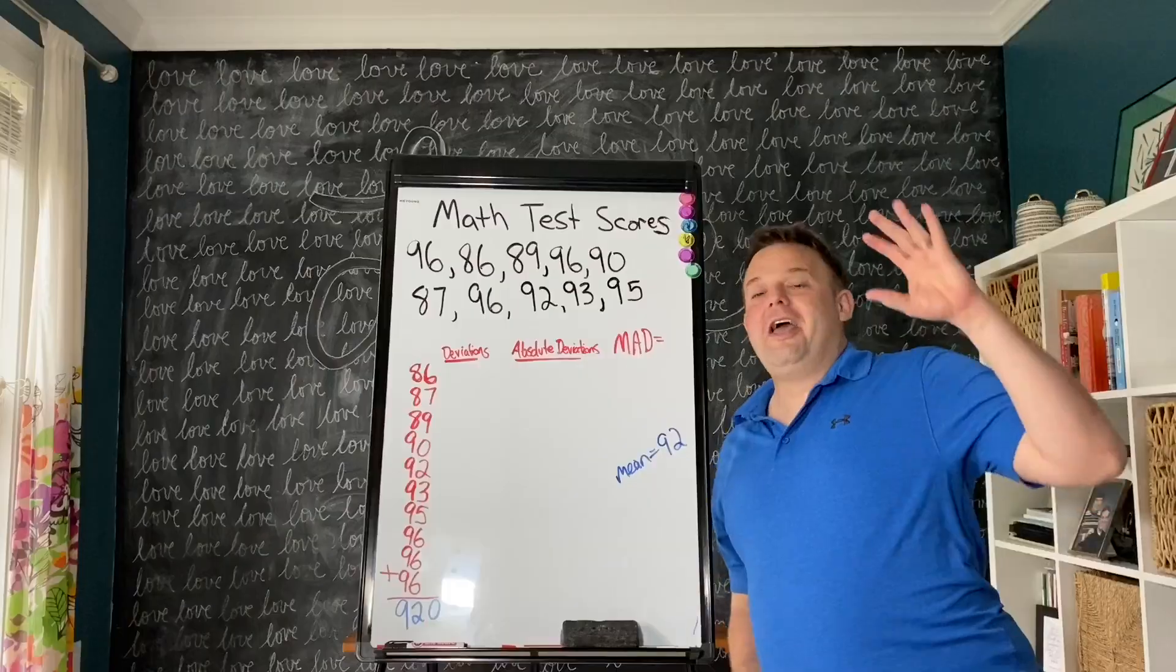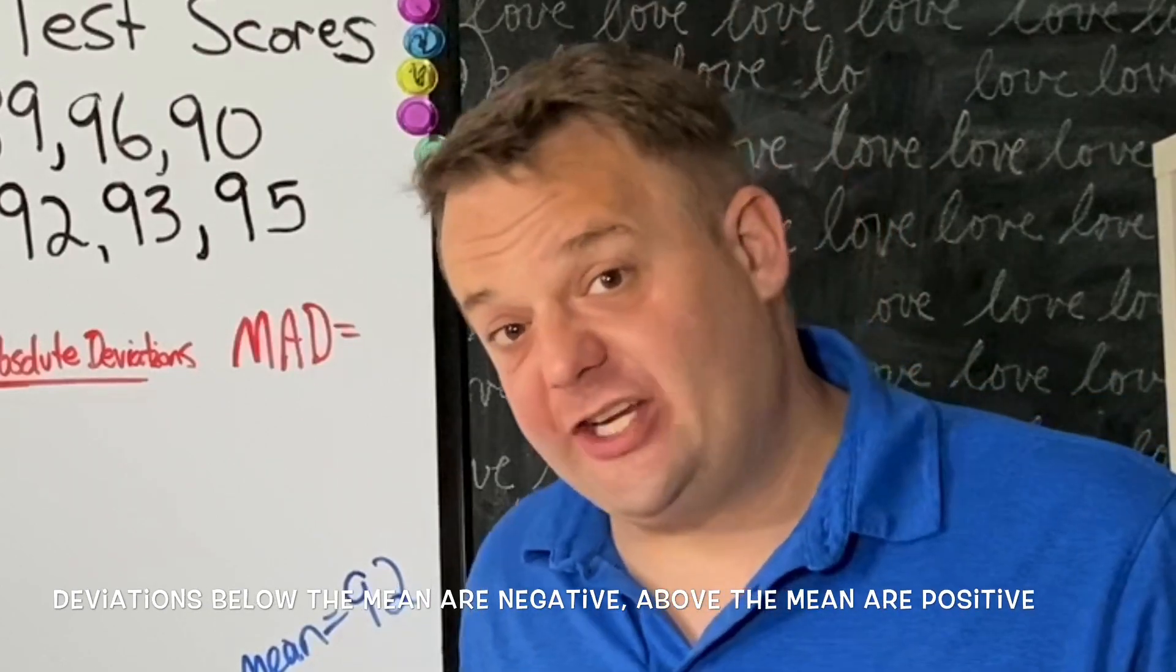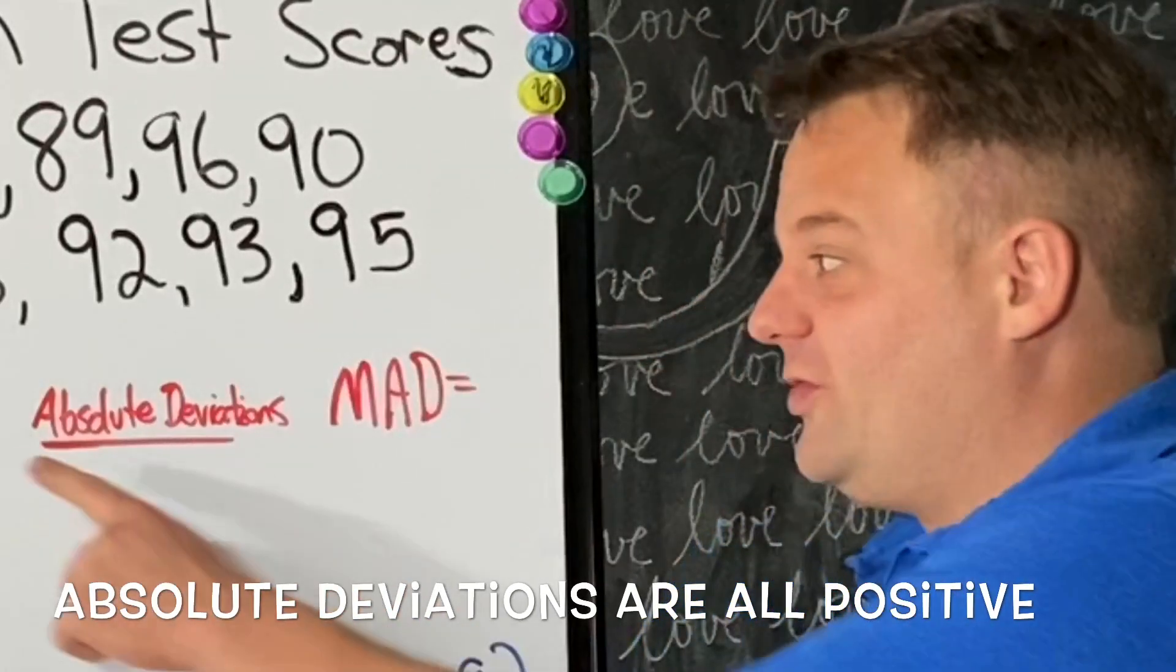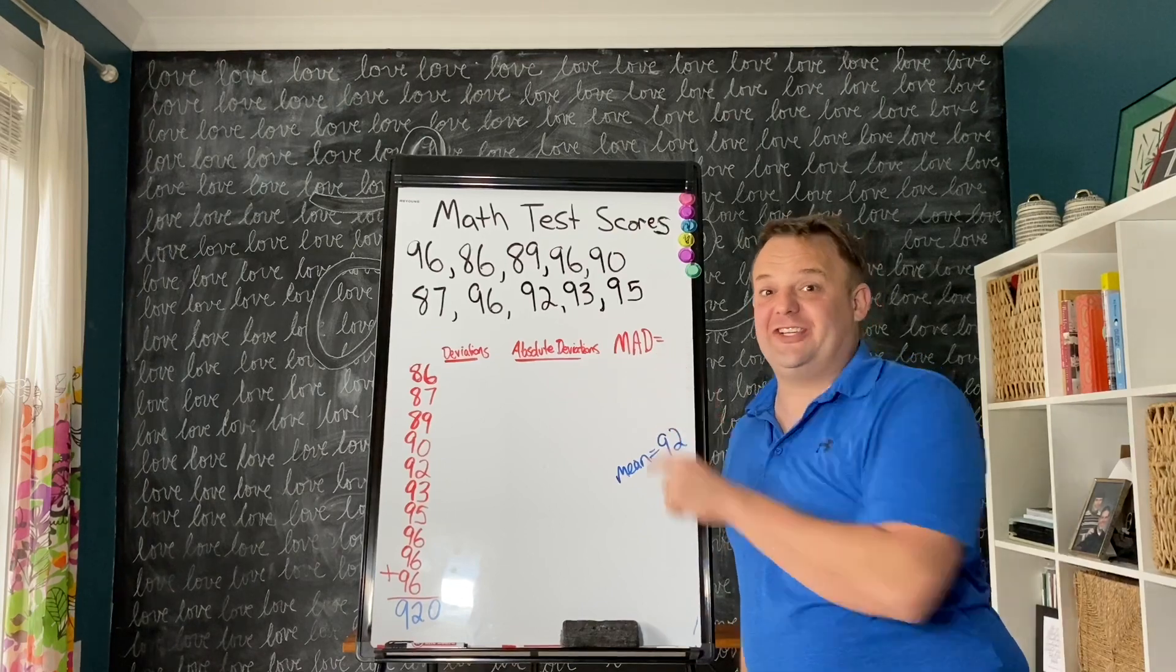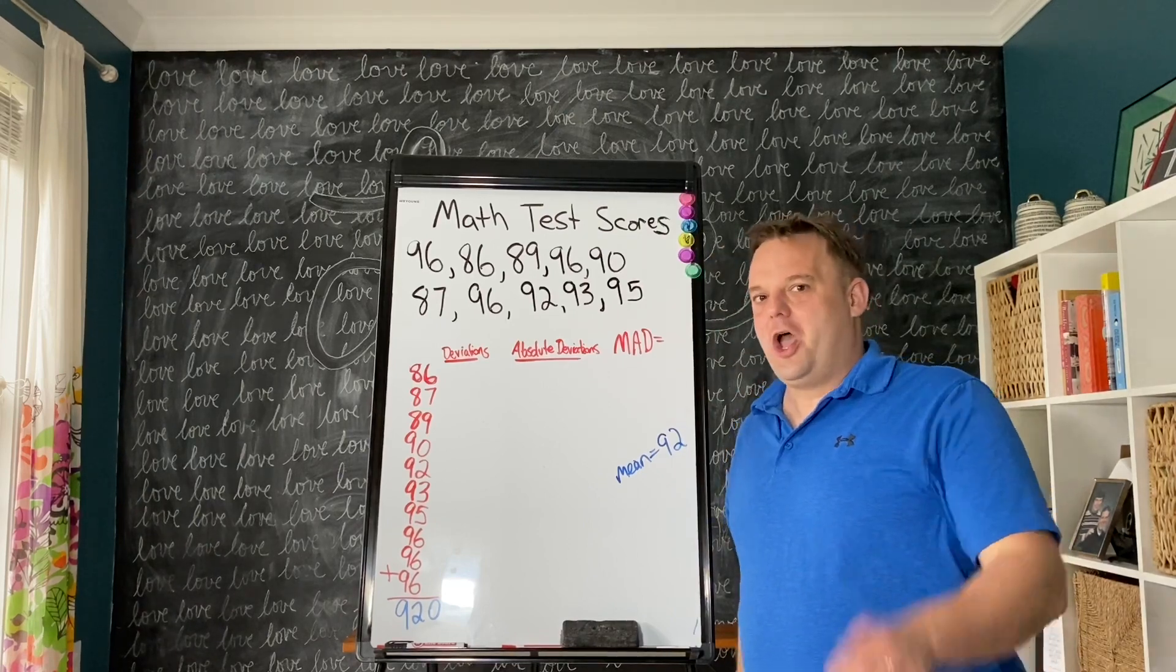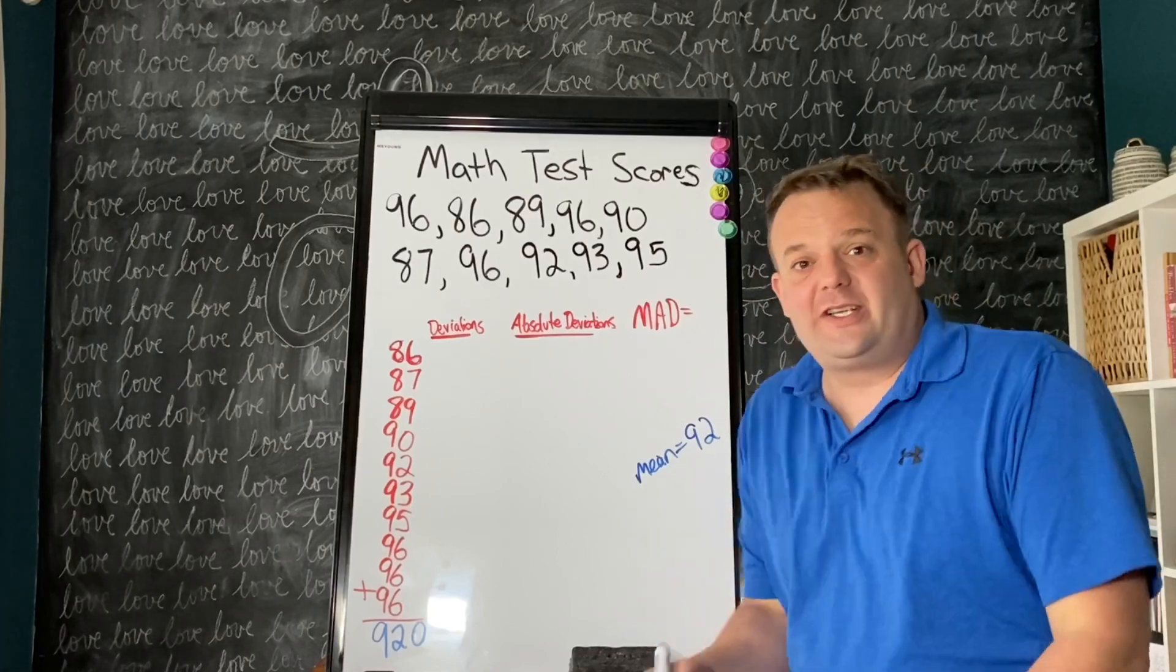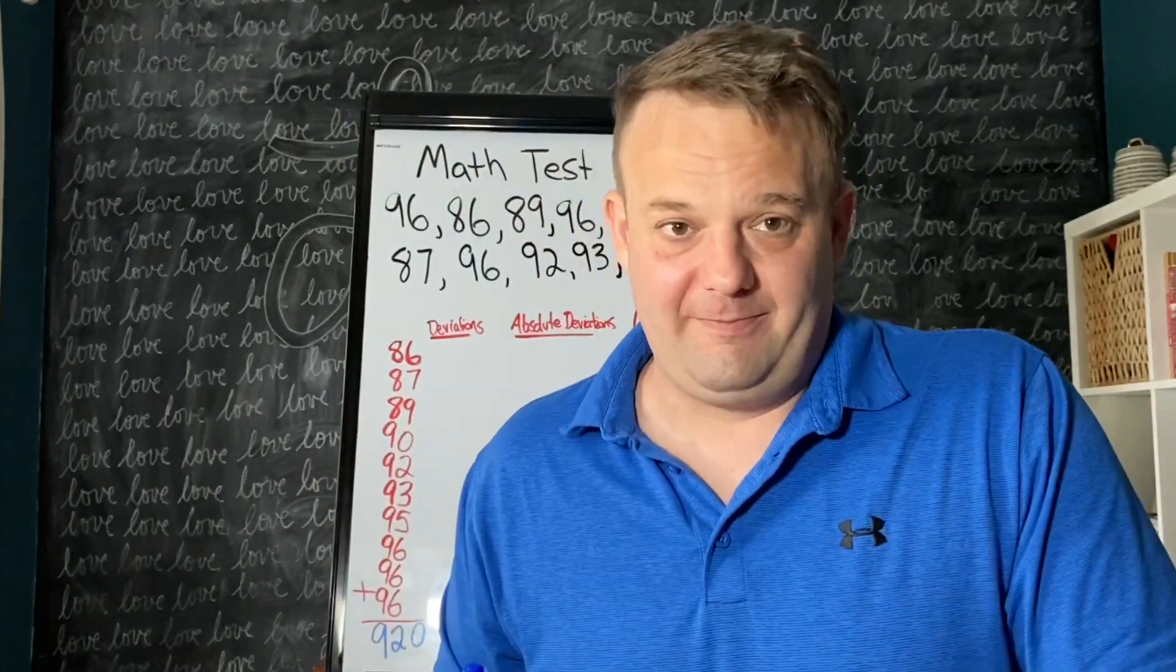Now that we have the mean, we're going to find the deviations, then the absolute deviations, and then the mean of the absolute deviations. It's the hardest and last lesson we learn in sixth grade, but you can do it and I can help you. The deviations means the distance from the mean, how far away from the mean.